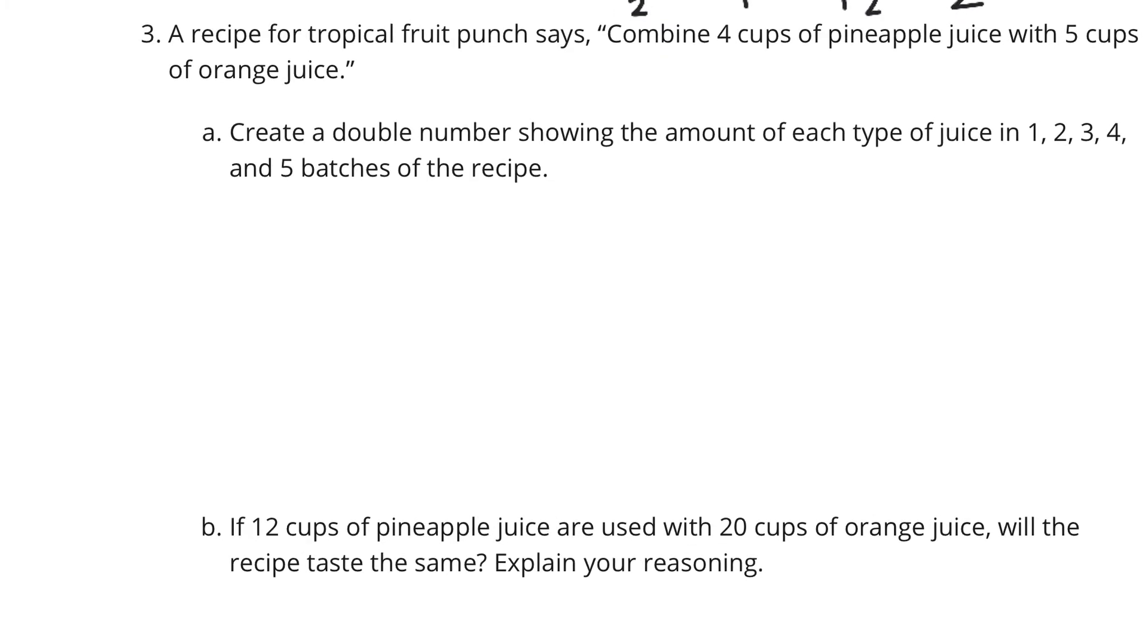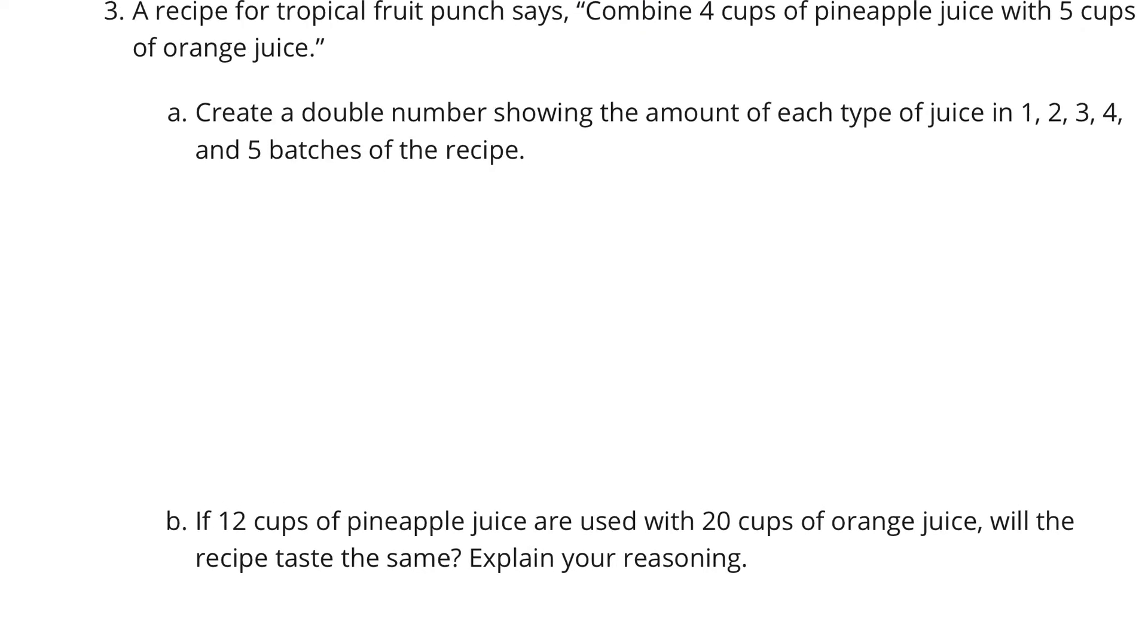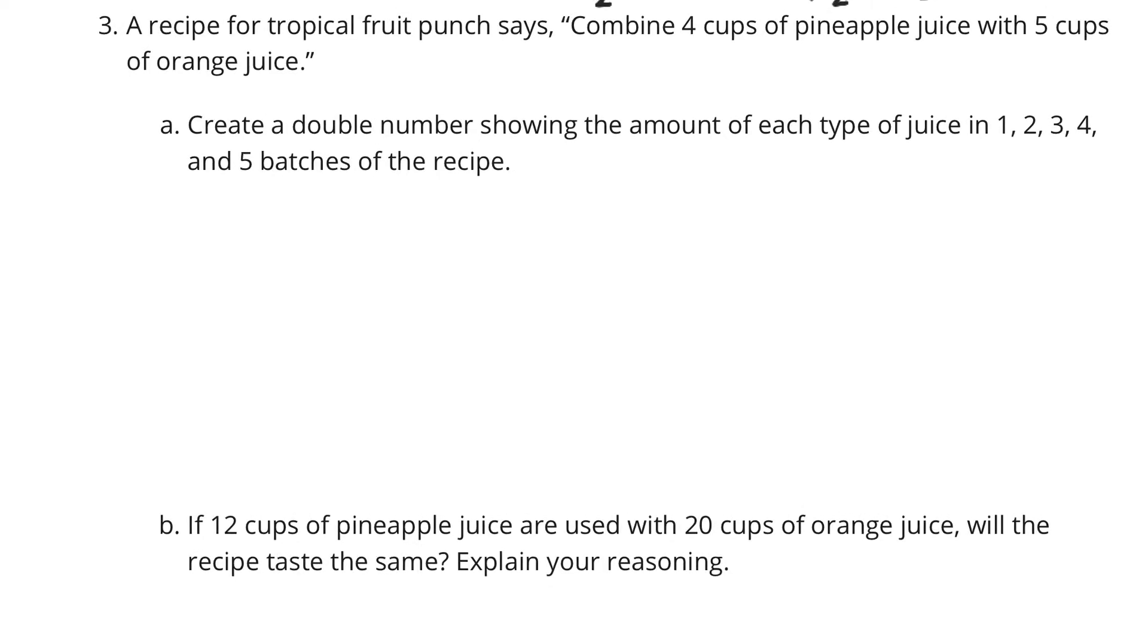Question 3. A recipe for tropical fruit punch says combine 4 cups of pineapple juice with 5 cups of orange juice. Create a double number line showing the amount of each type of juice in 1, 2, 3, 4, and 5 batches of the recipe. So we're going to draw 2 lines. We're saving space here on the left side for our labels, though.